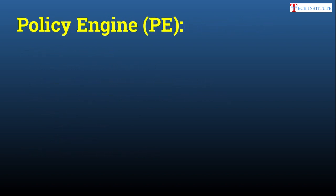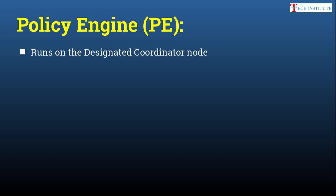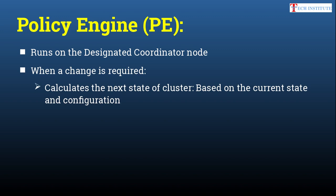Now there is one more important component called the Policy Engine (PE). The Policy Engine runs on the Designated Coordinator node. So in a three-node cluster, if the second node becomes the DC, the PE also runs on that node. When a change is required, the PE calculates the next state of the cluster based on the current state and configuration — for example, deciding that a resource should move from running to stopped — and accordingly takes the actions.